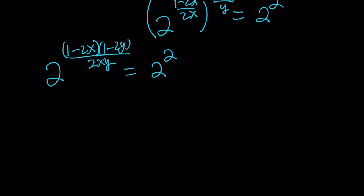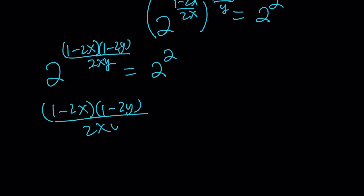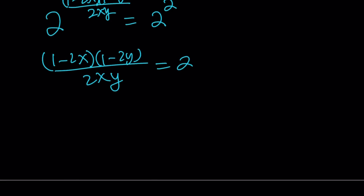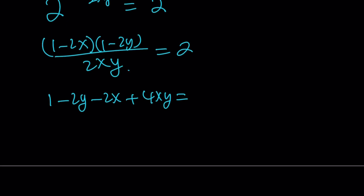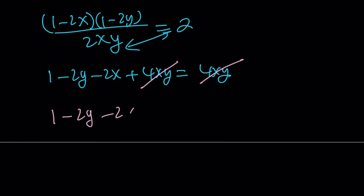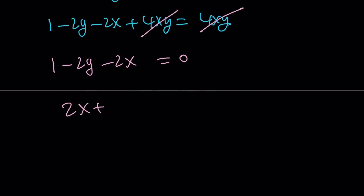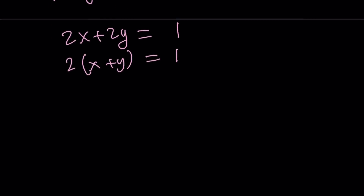Now we set the exponents equal to each other, since the bases are both 2. Cross-multiplying and simplifying the numerator gives 1 minus 2y minus 2x plus 4xy equals 4xy. The 4xy terms cancel — beautifully! — leaving 1 minus 2y minus 2x equals 0. Isolating 2x plus 2y gives 1, which means 2 times (x plus y) equals 1, and dividing both sides by 2 gives x plus y equals 1 half.